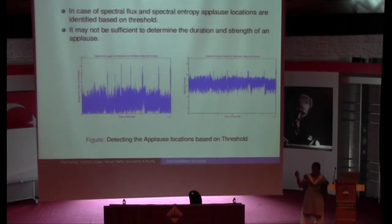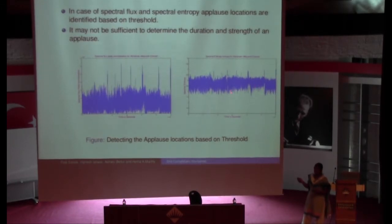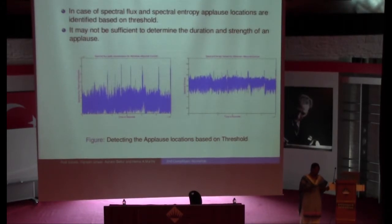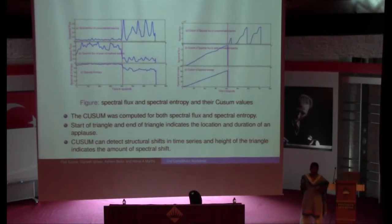Here I have plotted spectral flux and spectral entropy features for a whole three-hour concert — the Abhishek Raghuram concert. These are the spectral flux features and these are the spectral entropy features. The peaks indicate the applause locations. However, a simple threshold technique won't help me find out which are the huge applause events, and that is the reason I use the cumulative sum technique.